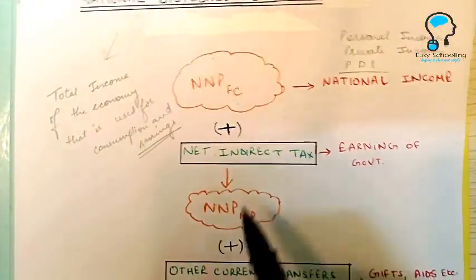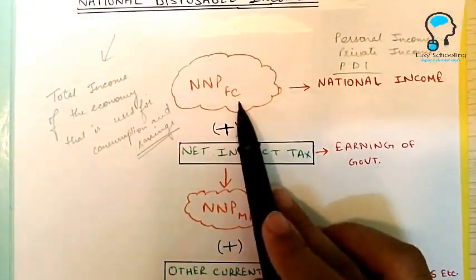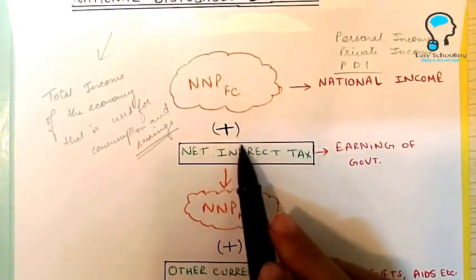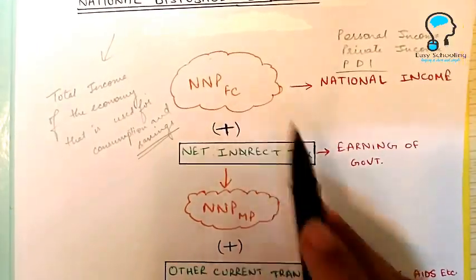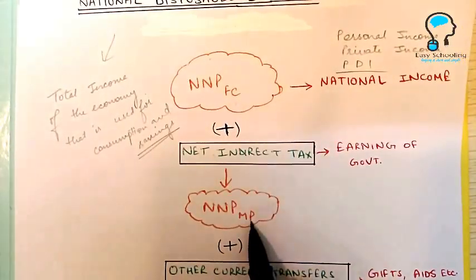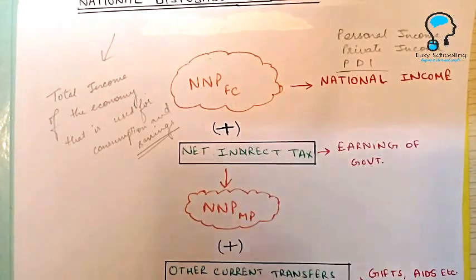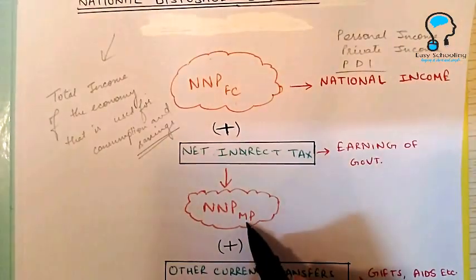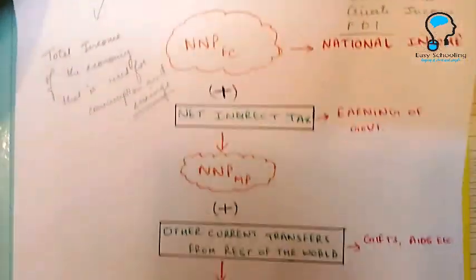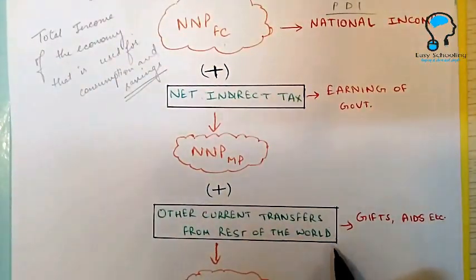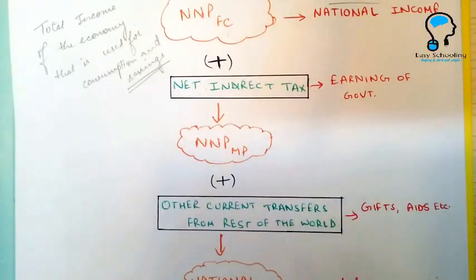Adding net indirect taxes to the factor cost gives you market price, so you get NNP MP. After getting NNP MP, one more thing you need to add is other current transfers from the rest of the world.